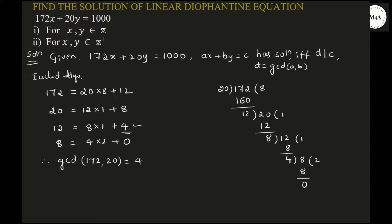Once you find GCD, the next step is to check whether d divides c. Here d is 4 and c is 1000. Does 4 divide 1000? Yes — you get 250. So it means the given equation admits solutions; it has solutions.